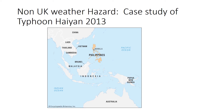In the exam you might be asked about a non-UK weather hazard, so your case study of this was Typhoon Haiyan, which was a tropical storm that struck the Philippines in 2013. The Philippines is an EDC — an emerging and developing country — still fairly poor, and it's located in the subtropics, around 800 miles north of the equator in the Pacific Ocean.